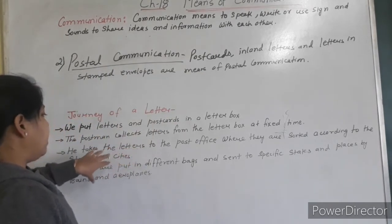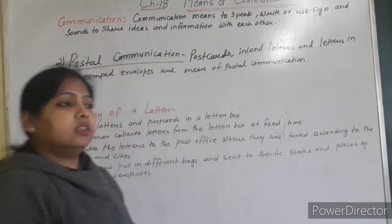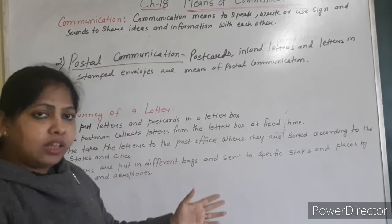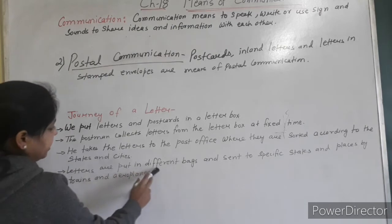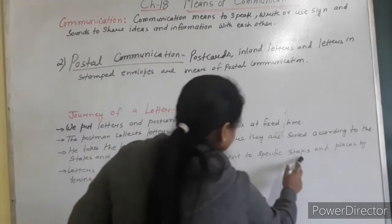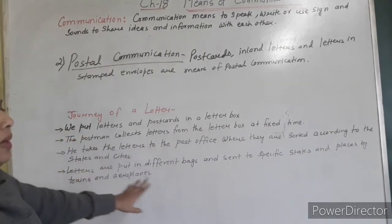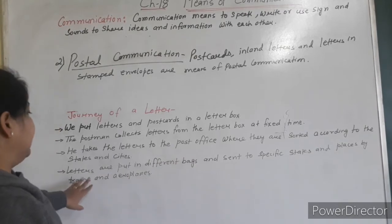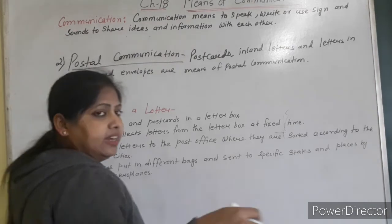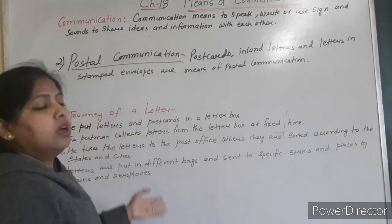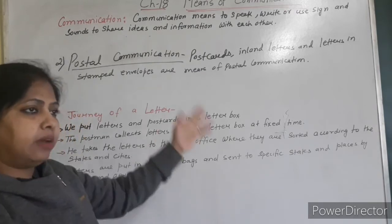He takes the letters to the post office where they are sorted according to the states and cities. The postman collects all the letters from the post box and takes them to the post office. There they sort and separate all the letters according to the cities and states. Then the letters are put in different bags and sent to the specific states and places by trains and airplanes.